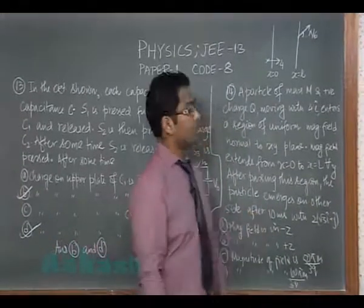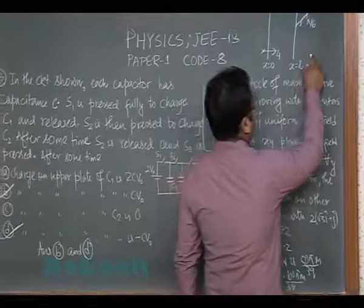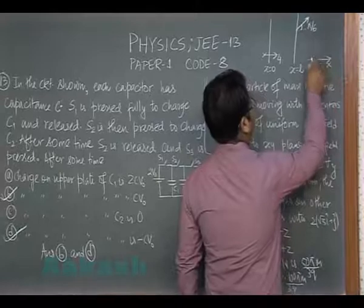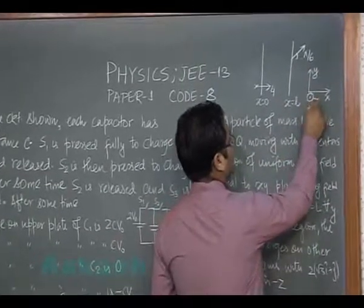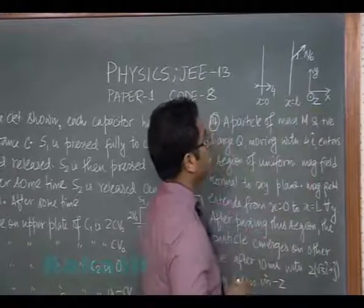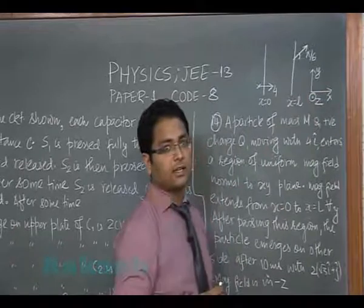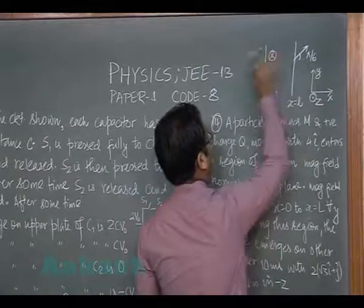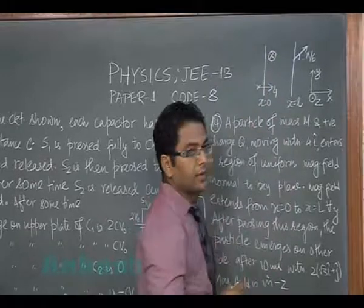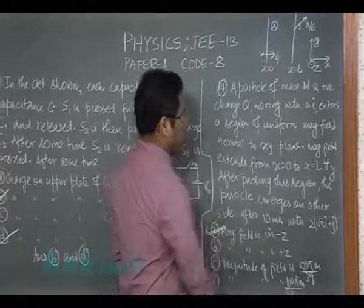Based on this value, now the first option says magnetic field is in negative z direction. That has to be true because if we take this as x and if we take this as y, z axis has to be outside. But look at the deviation and applying Fleming's left hand rule, it says magnetic field has to be inside, that is cross, and that means magnetic field has to be in the negative z direction.